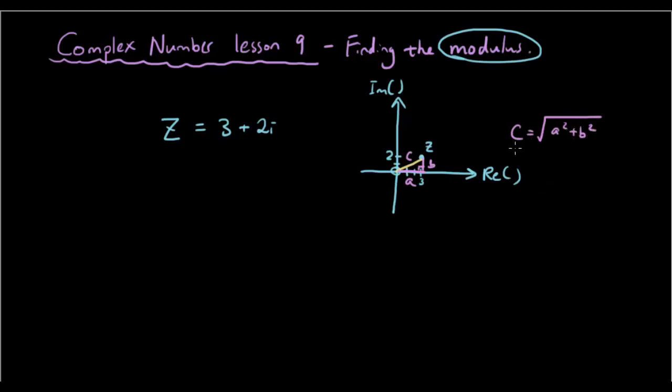So in this case, the length, the modulus of z, the length of c, is equal to 3 squared plus 2 squared square root.